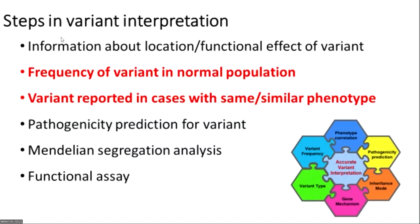These are the various steps we follow when classifying a variant, integrated into the American College of Medical Genetics and the American Association of Molecular Pathology guidelines. Classification is based on information about the location and functional effect of the variant, its frequency in the normal population, whether that variant is reported in other similar cases, pathogenicity prediction scores, Mendelian segregation in the family, and any available functional assay. Based on all these evidences, we ultimately classify the variant as benign, likely benign, pathogenic, likely pathogenic, or a variant of uncertain significance.